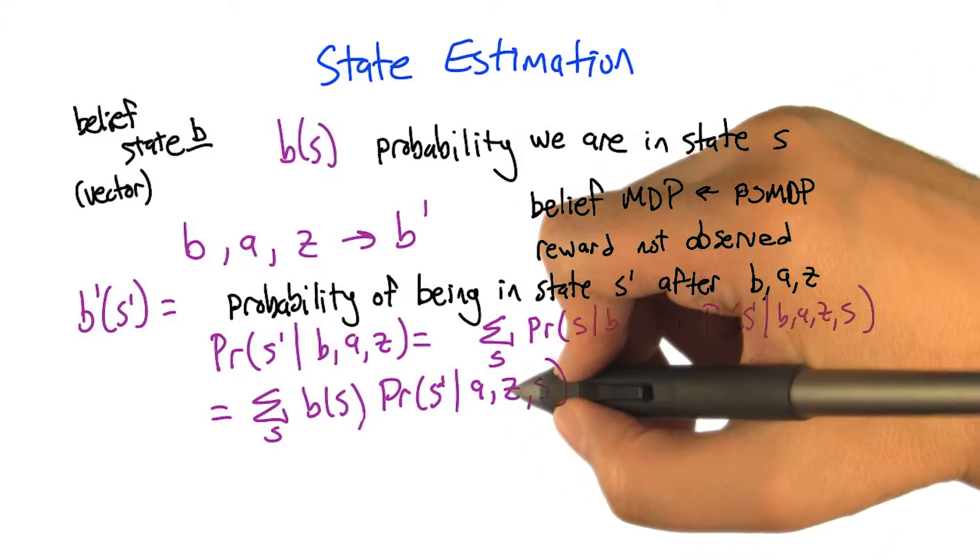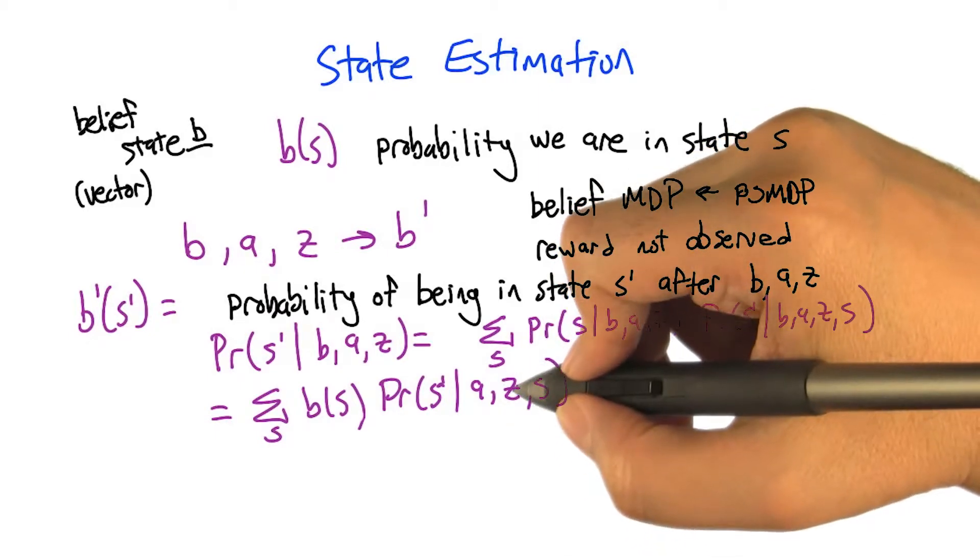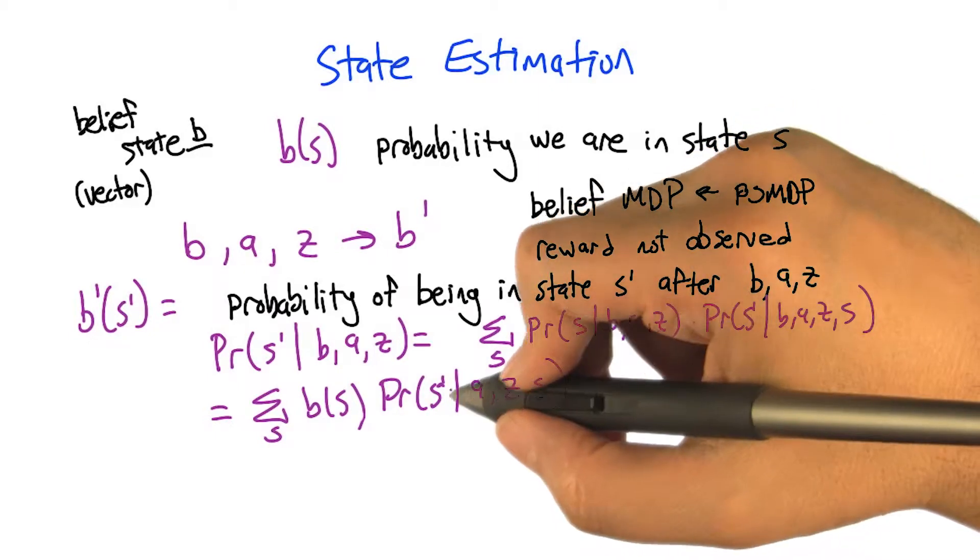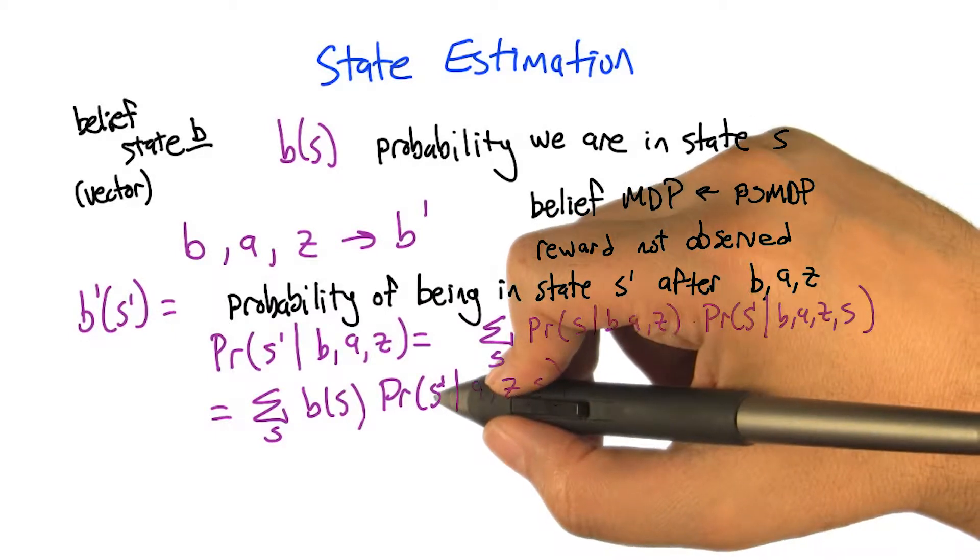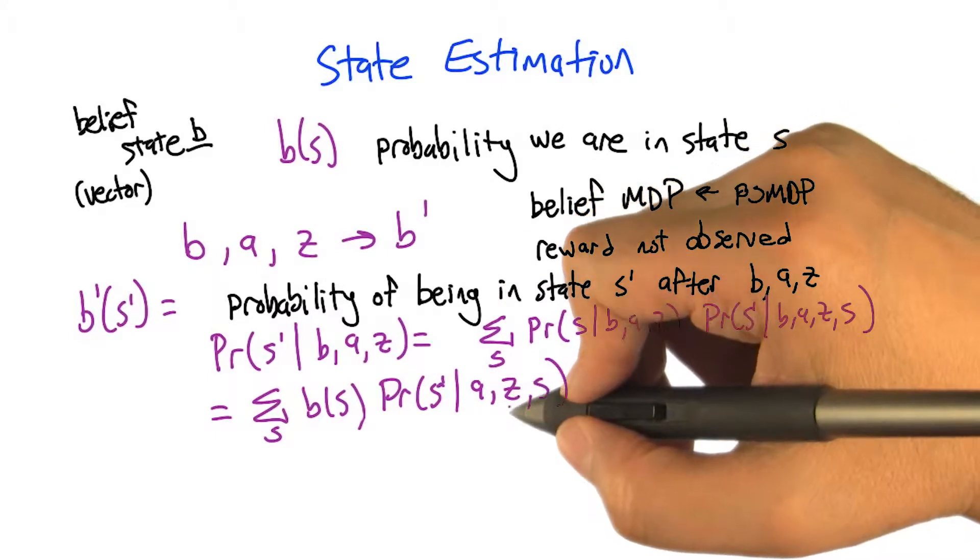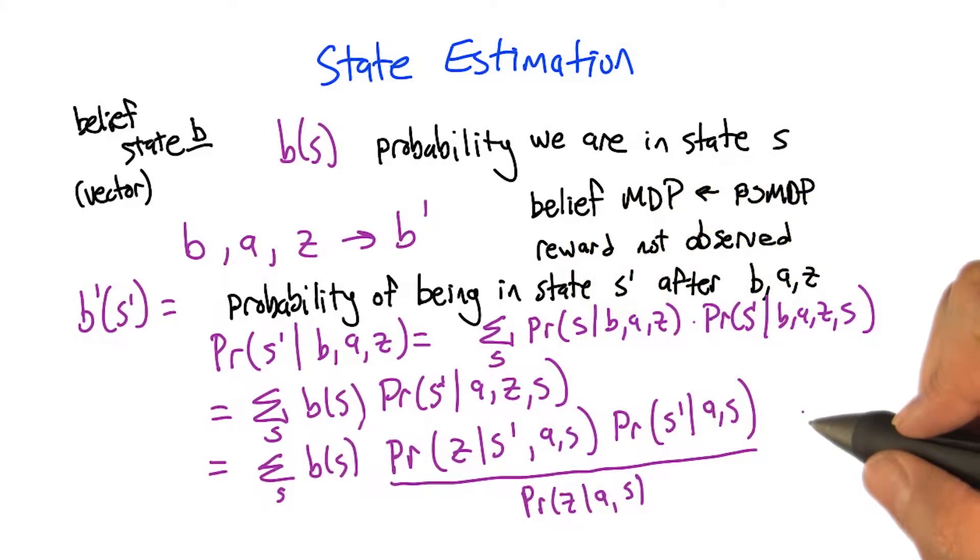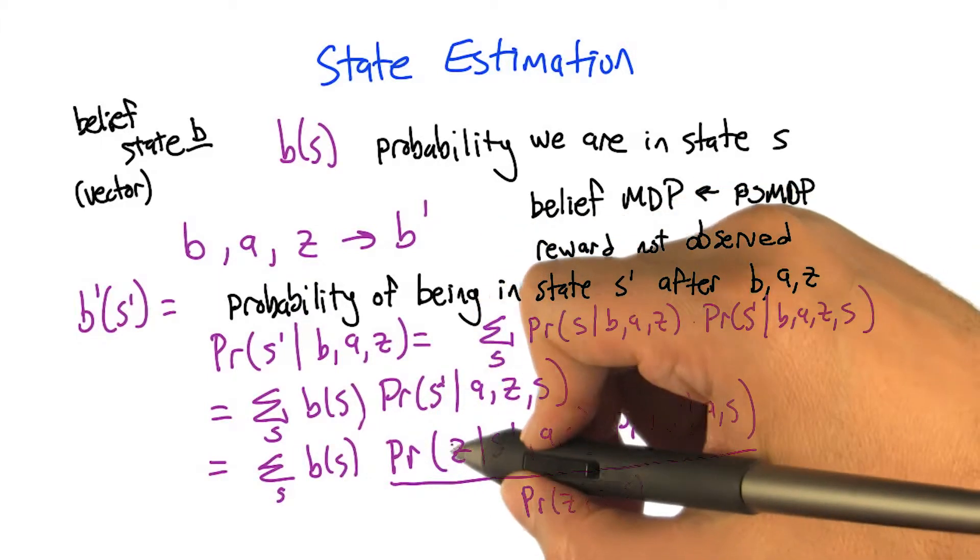So I think that the thing to point out here is that the observation that we saw is generated by the state that we ended up in. And so we're actually trying to figure out what state we were in, based on the observation we got, when in fact the generative model goes the other way. So this is a prime situation to try to use Bayes rule. Prime. It's an S-prime situation for using Bayes rule.